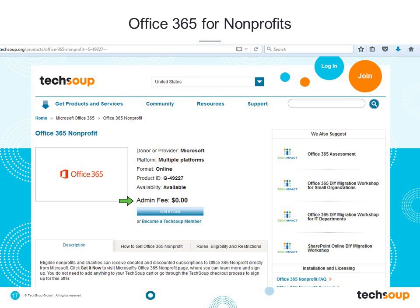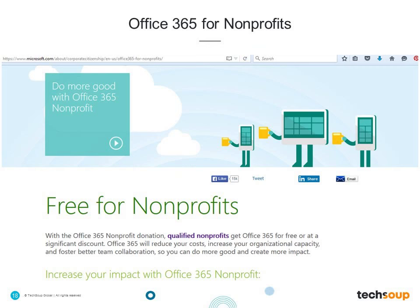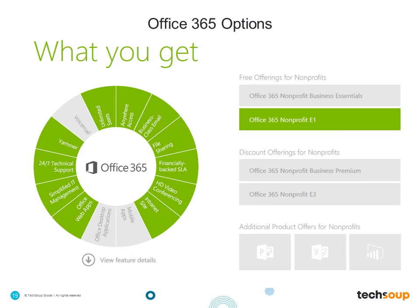If you are new to TechSoup and need to go through the trial process, your application comes through us and we help validate that you are in fact eligible. Then your upgrade happens automatically to having a full-fledged account. When you click on the Get It Now button, it takes you to a Microsoft page that talks about your free for nonprofits Office 365 and what a Qualified Nonprofit means. You can look at the different options available.